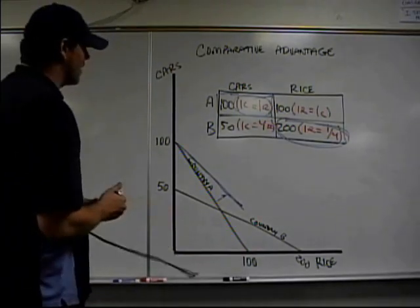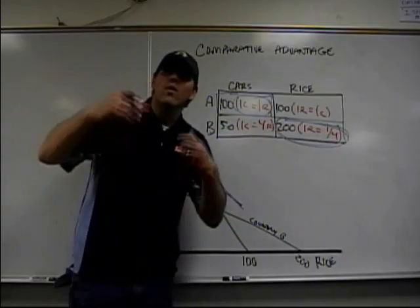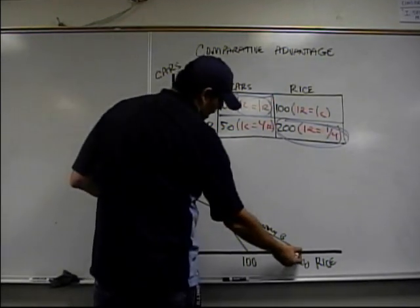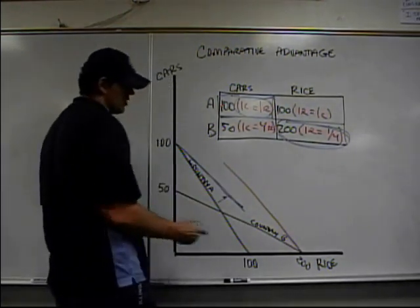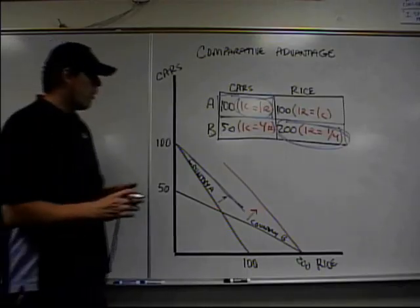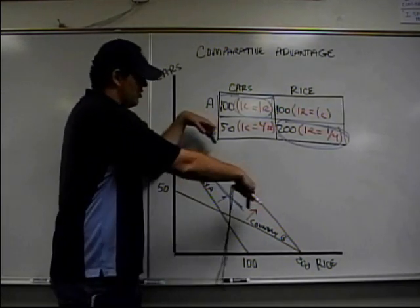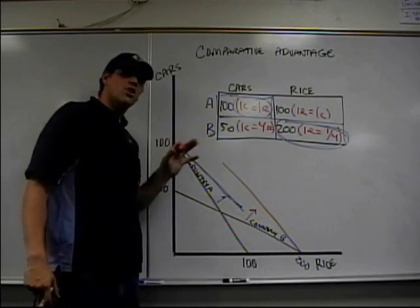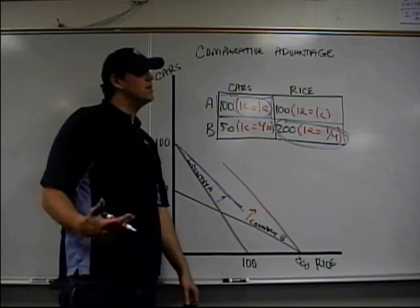In Country B, on the other hand, they're going to specialize only in the production of rice. They're going to trade with the other country — they'll produce all rice and get cars cheaper from the other country, and that's going to cause their curve to shift out as well. Notice, both curves don't shift — they're not going to get more cars and more rice. It doesn't shift the whole curve out. It only shifts the one that they're trading for, at a lower opportunity cost.